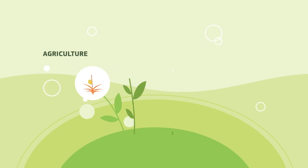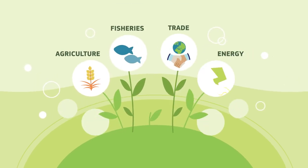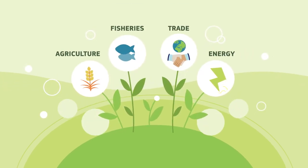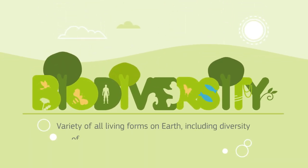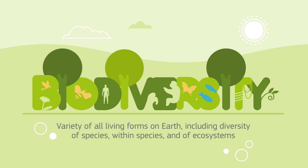What do agriculture, fisheries, trade and energy have in common? They are key to our lives, but can also negatively impact our life insurance system, that is biodiversity.